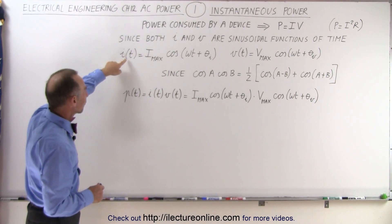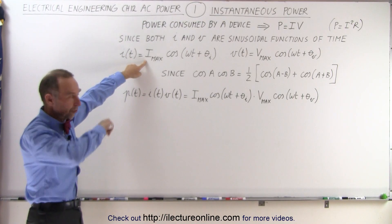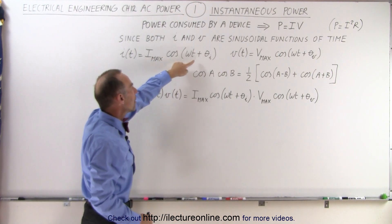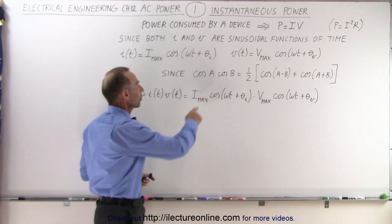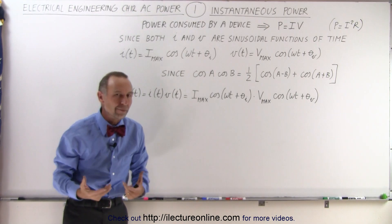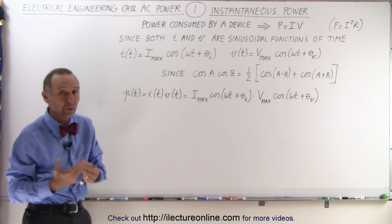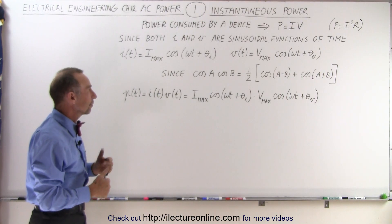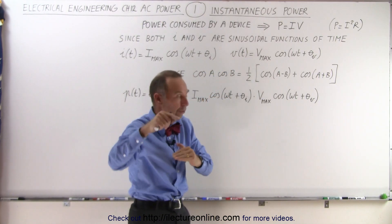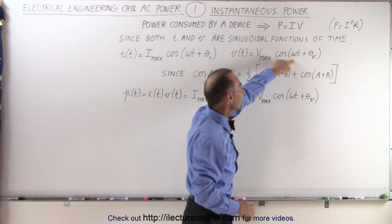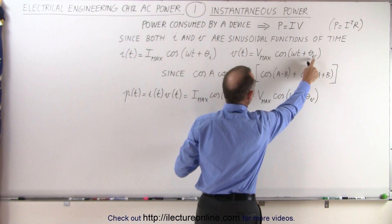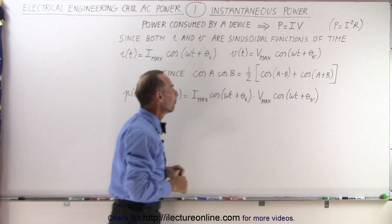We can write the current as a function of time as having a maximum current — the maximum amplitude of the sinusoid — times the cosine of omega t plus an arbitrary phase angle theta sub i, because this phase angle is associated with the current. We could use sine or cosine; we'll go with cosine. Likewise, the voltage as a function of time is the maximum voltage times the cosine of omega t plus a phase angle theta sub v, associated with the voltage function.